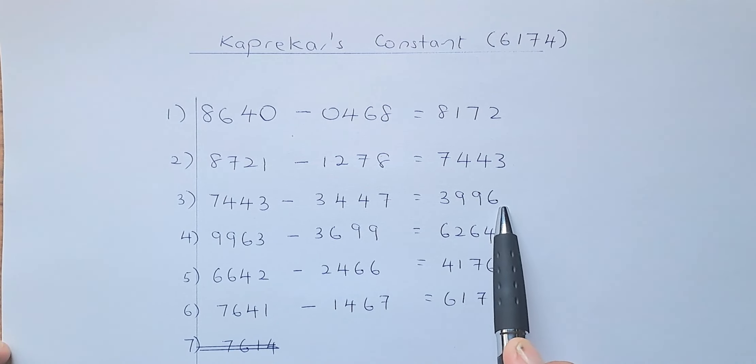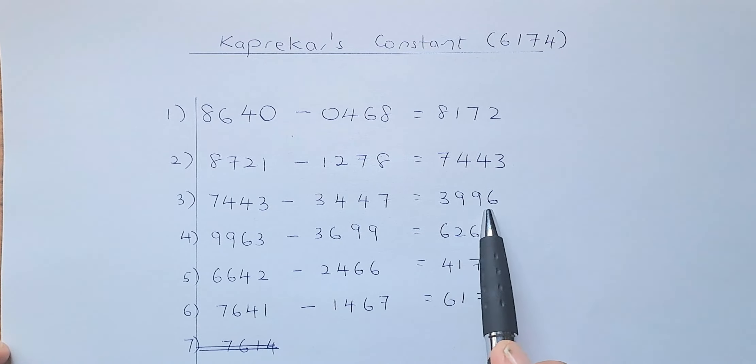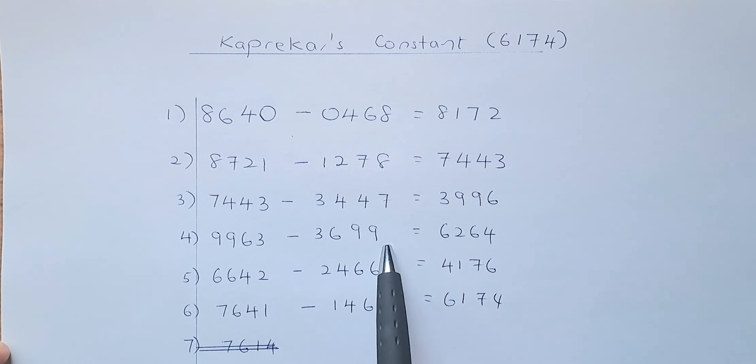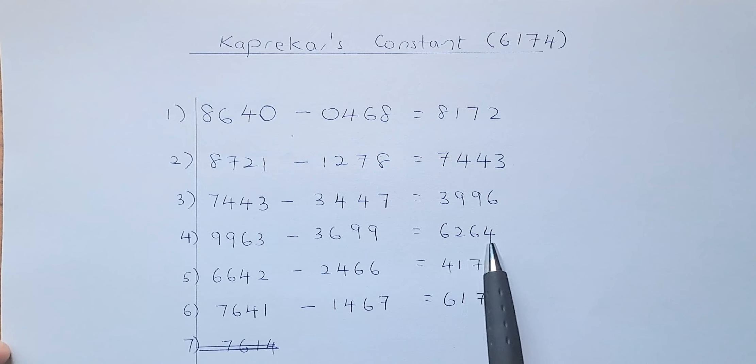Now you have to rearrange the number again. 3996 becomes 9963 from biggest to smallest. Then you're going to minus the reverse, 3699, and you'll get 6264.